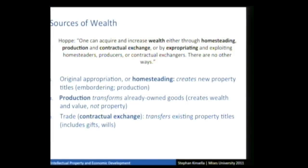The pool of knowledge we can all draw on to make decisions about what means to use and what ends to pursue always grows — this is one reason why we have societal progress. Now let's get to what I was aiming at through all this preliminary talk. What are the sources of wealth? As Hoppe explains, there are only three ways to generate wealth: you can acquire and increase wealth through homesteading, production, and contractual exchange — or through expropriating from others.